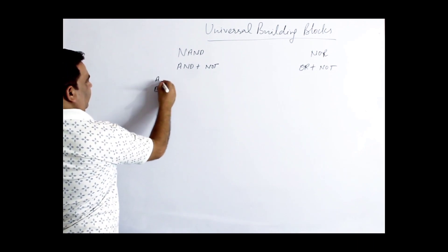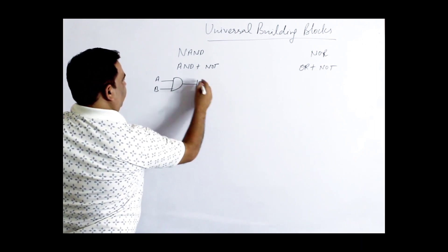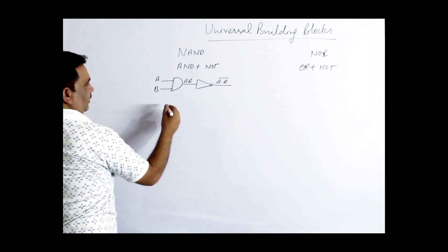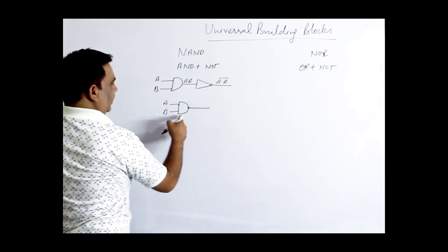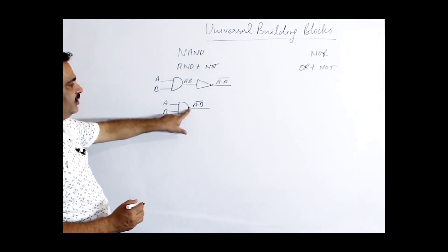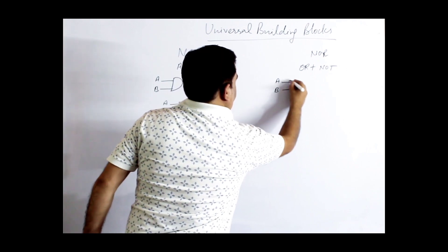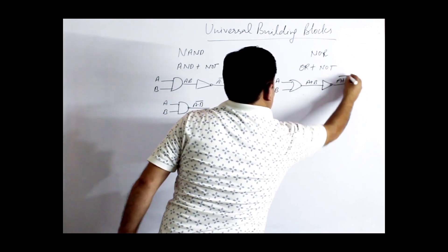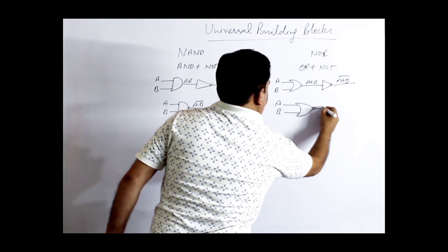If inputs are A and B, this is an AND gate combined with a NOT gate, giving A·B at first and then A·B complement. The symbol for NAND gate has a circle representing the NOT gate. Similarly, OR gate combined with NOT gives A+B complement, and the specific symbol for NOR gate includes that circle as well.